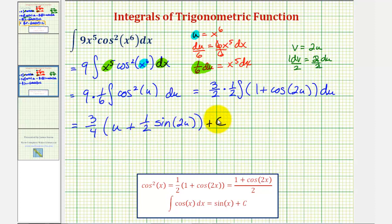So writing this in terms of x, we would have three-fourths times u, which is x to the sixth, plus... here we have three-fourths times one-half, that would be three-eighths sine two u, which is two x to the sixth. This would be our antiderivative.